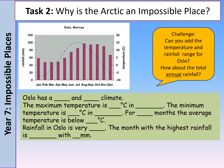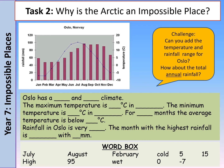I'd like you to use all of the different words and figures from the word box to complete this word fill on Oslo's climate. Oslo is the capital of Norway. Write it out, or drag the words from the word box into the correct places in the PowerPoint. There's also a little challenge: can you work out the temperature range and rainfall range for Oslo, or the annual rainfall? Annual means yearly — to work out the yearly rainfall, you'd need to add up all of those bars for each month. The temperature range is the lowest temperature subtracted from the highest temperature. Have a little go at that if you can.